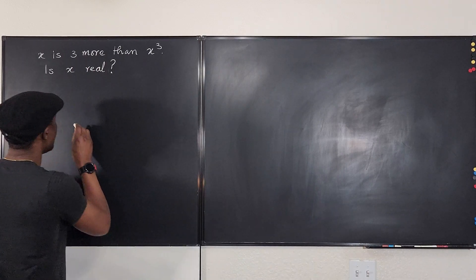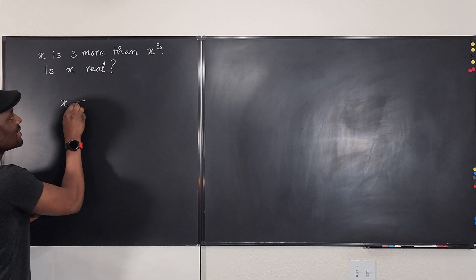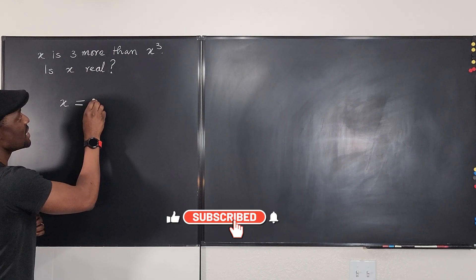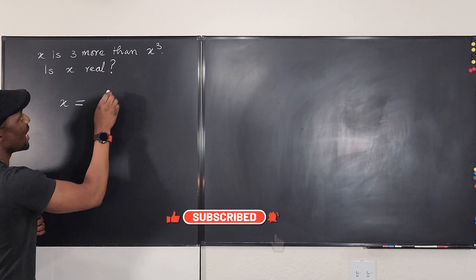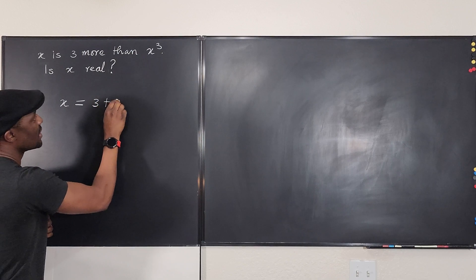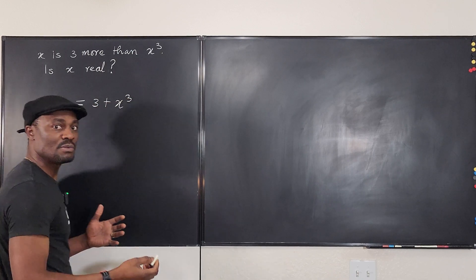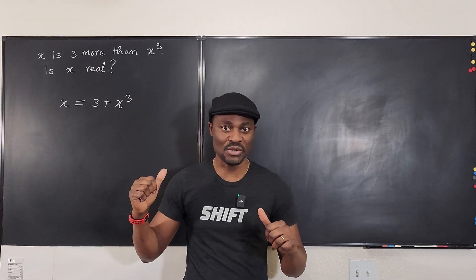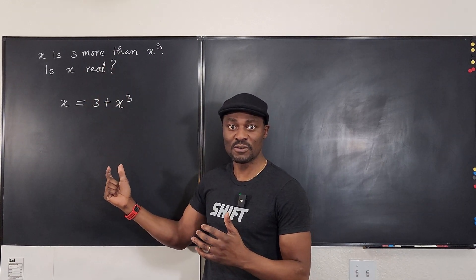So we could say that x is equal to 3 more, which means we're going to add 3 to x cubed: 3 plus x cubed, or x cubed plus 3. That's the equation that translates this into mathematics.